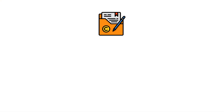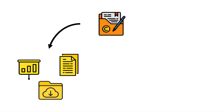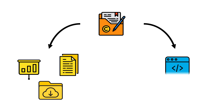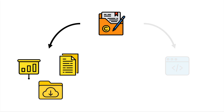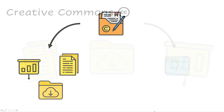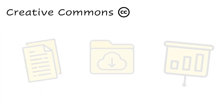Let's see how to choose a license, first for data and then for software. One of the most common licenses for papers, data, presentations — basically everything but software — are the Creative Commons licenses.